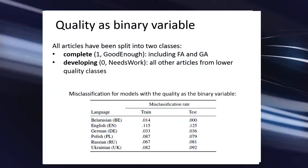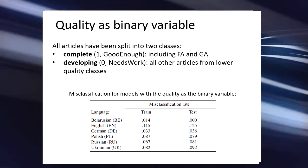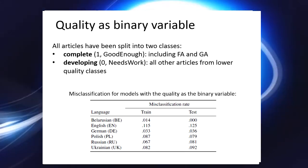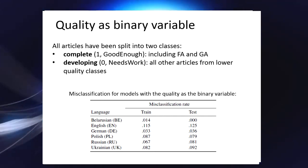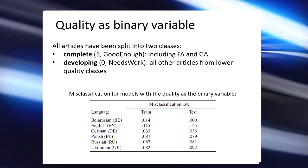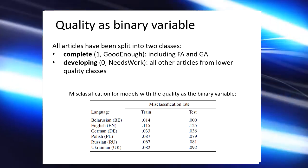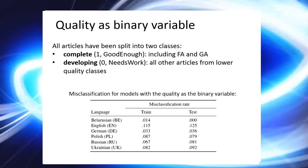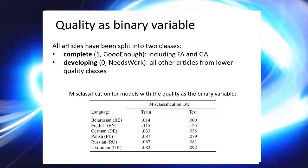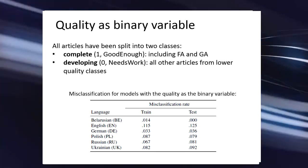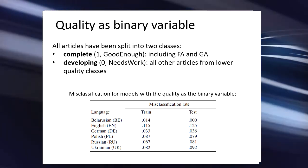We built models for quality as a binary variable using various state-of-the-art methods. All articles were split into two classes: one complete, labeled 'good enough', including FA and GA — which are the most reliable grades based on voting — and zero, labeled 'needs work', including all other articles from lower quality classes. For the prediction of quality class we used the Random Forests classifier, which provided results with high precision in similar tasks. This approach works because practically in all language editions there are quality classes equivalent to English Featured Article and Good Article.